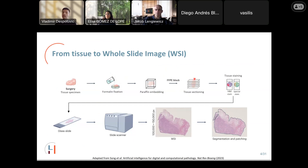Sections are further stained to emphasize certain cell characteristics. We mostly work with hematoxylin and eosin staining, which dyes cell nuclei purple and cytoplasm pink. The stained sections are placed on glass slides, which can be observed under a microscope or scanned using whole slide image scanners to obtain high-resolution images. These images obviously cannot be processed entirely but need to be divided into small parts known as patches or tiles.